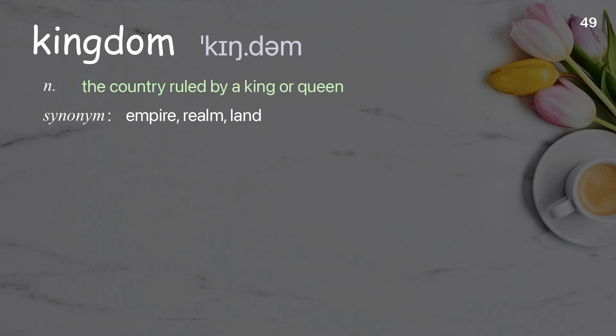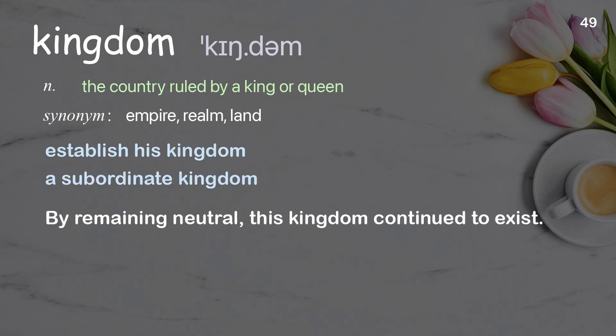Kingdom: The country ruled by a king or queen. Examples: Establish his kingdom. A subordinate kingdom. By remaining neutral, this kingdom continued to exist.